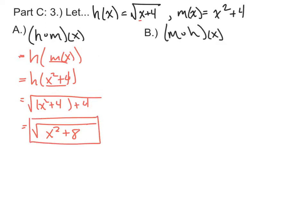So let's do it the other way around, m of h of x. Well, that is m of h of x. h of x being square root of x plus 4. That is the expression I'm going to plug in for x in the function of m.